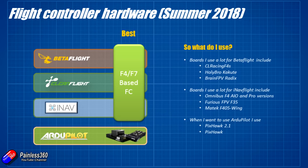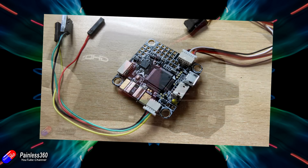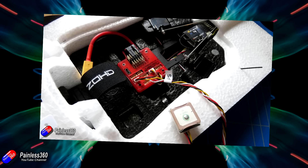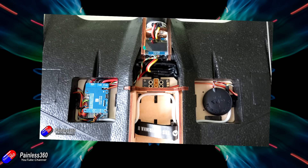For iNav flight, the choices are a little different. I like the Omnibus F4 all-in-one and pro flight controllers — they're really inexpensive, around $20, come in lots of different form factors, and the majority of iNav builds are done on these boards. I also did a build recently with the Furious FPV F35, which was the first flight controller I looked at that's specifically built around fixed wing. And the Matek F405 Wing is like the F35 on steroids — it can do pretty much everything and has more UARTs and ports than you can shake a stick at.